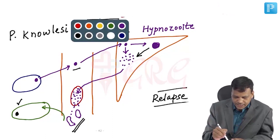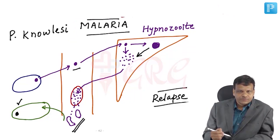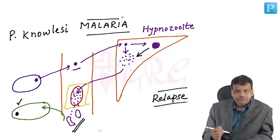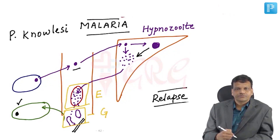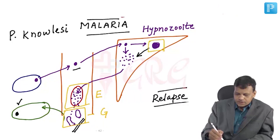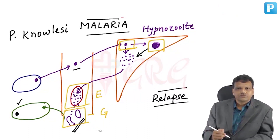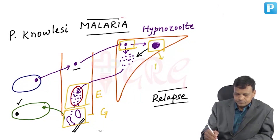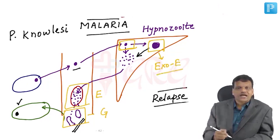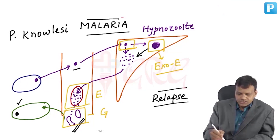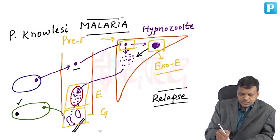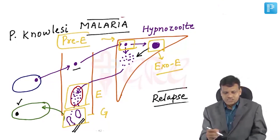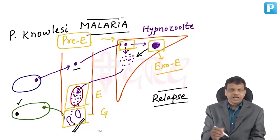For ease of understanding the drugs, we divide the life cycle into different stages. The stage inside the RBC is called the erythrocytic stage. The stage of gametes is the gametocytic stage. The stages outside the RBC are called exo-erythrocytic stages — including the hypnozoite stage. To differentiate from the hypnozoite stage, the first liver stage (before RBC entry) is called the pre-erythrocytic stage. So there are four stages: erythrocytic, gametocytic, exo-erythrocytic, and pre-erythrocytic.